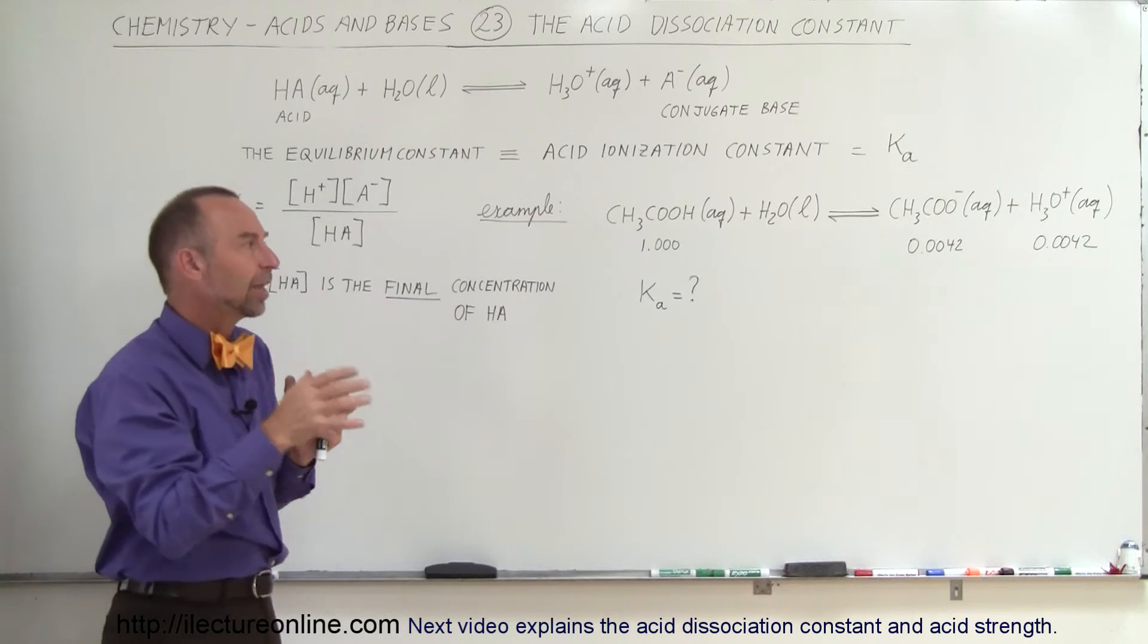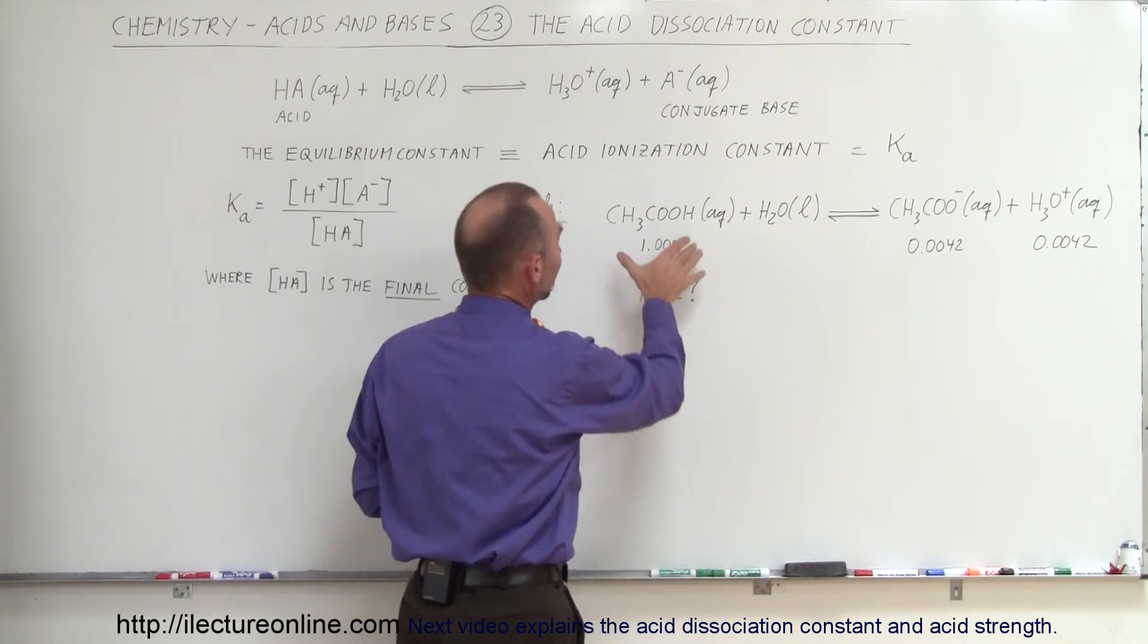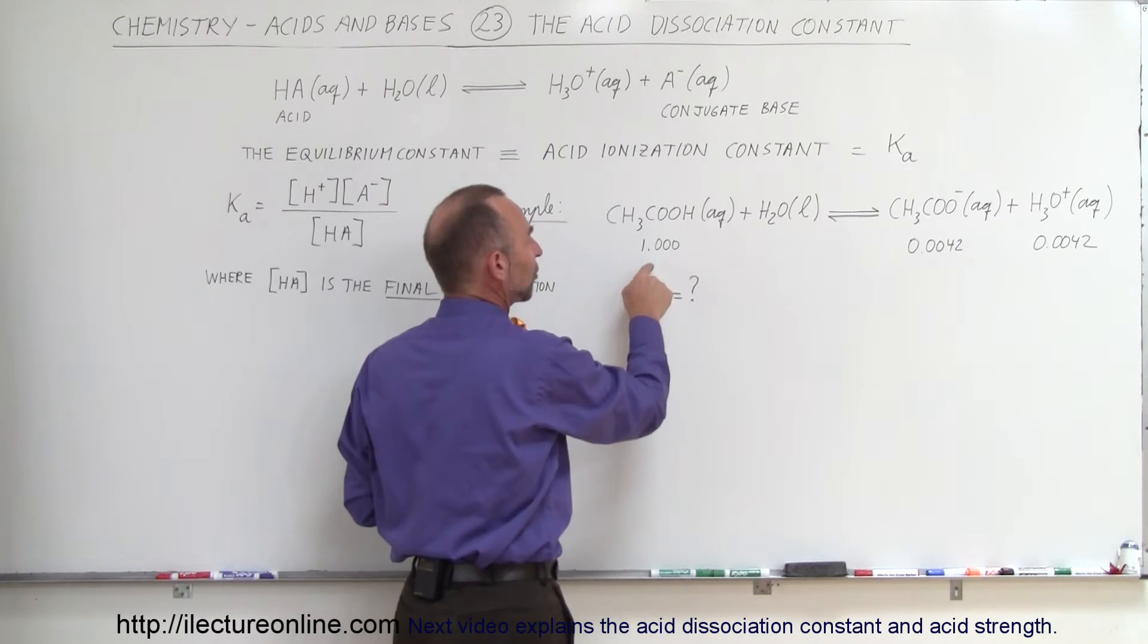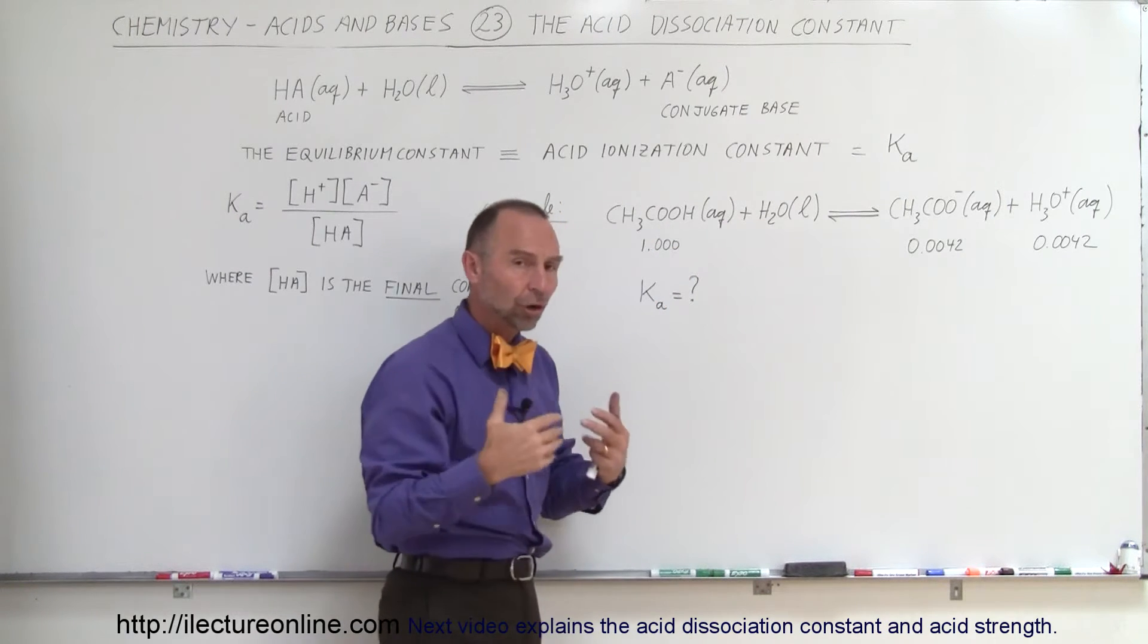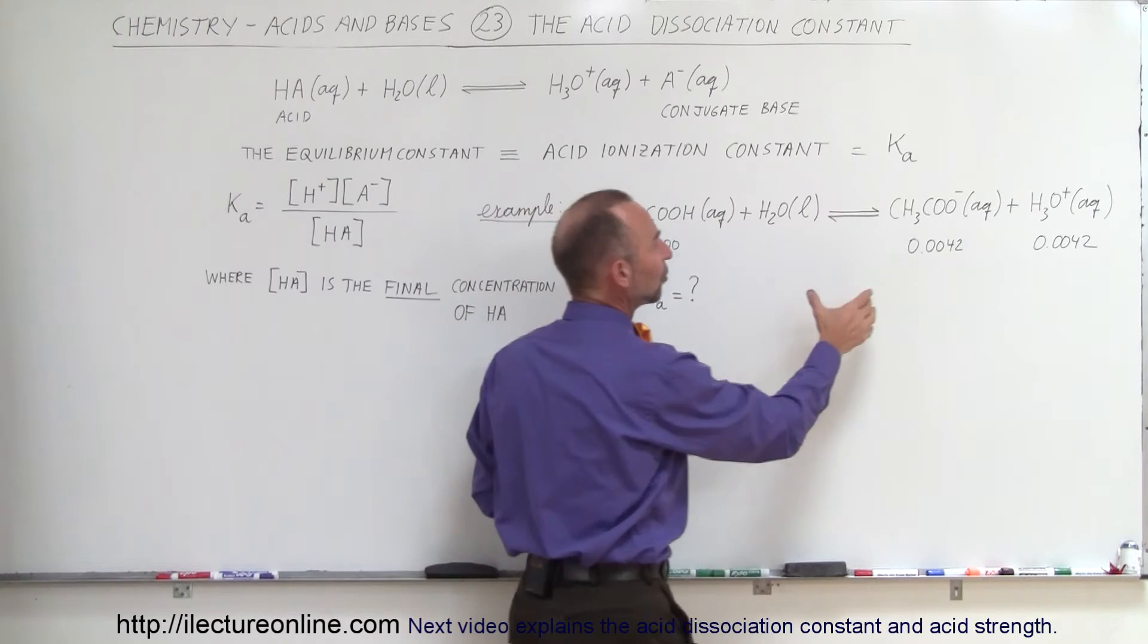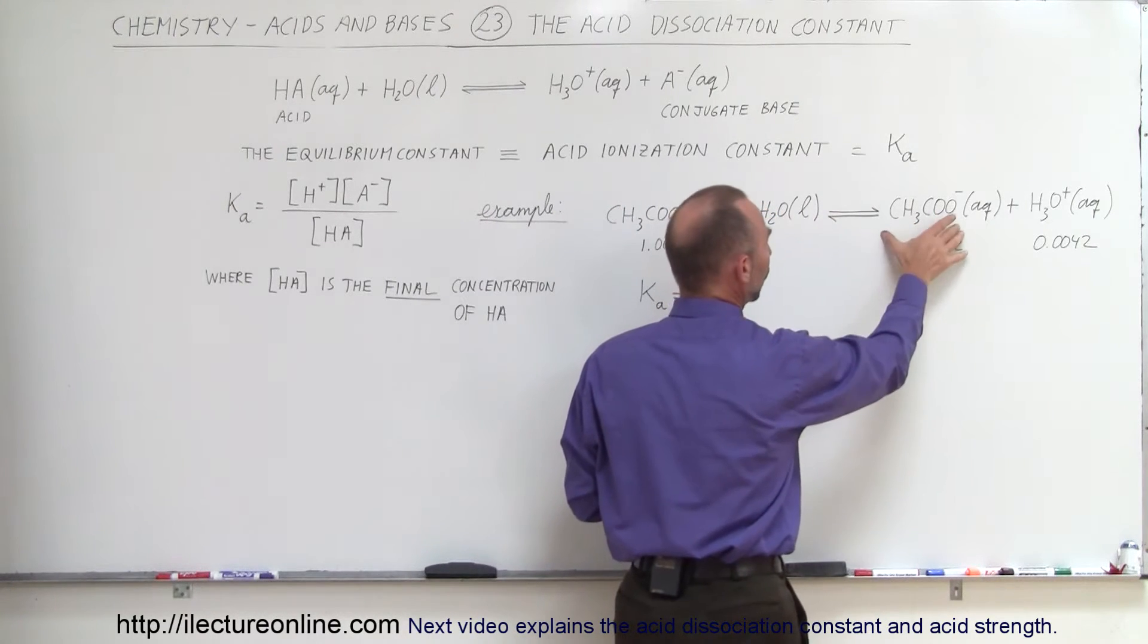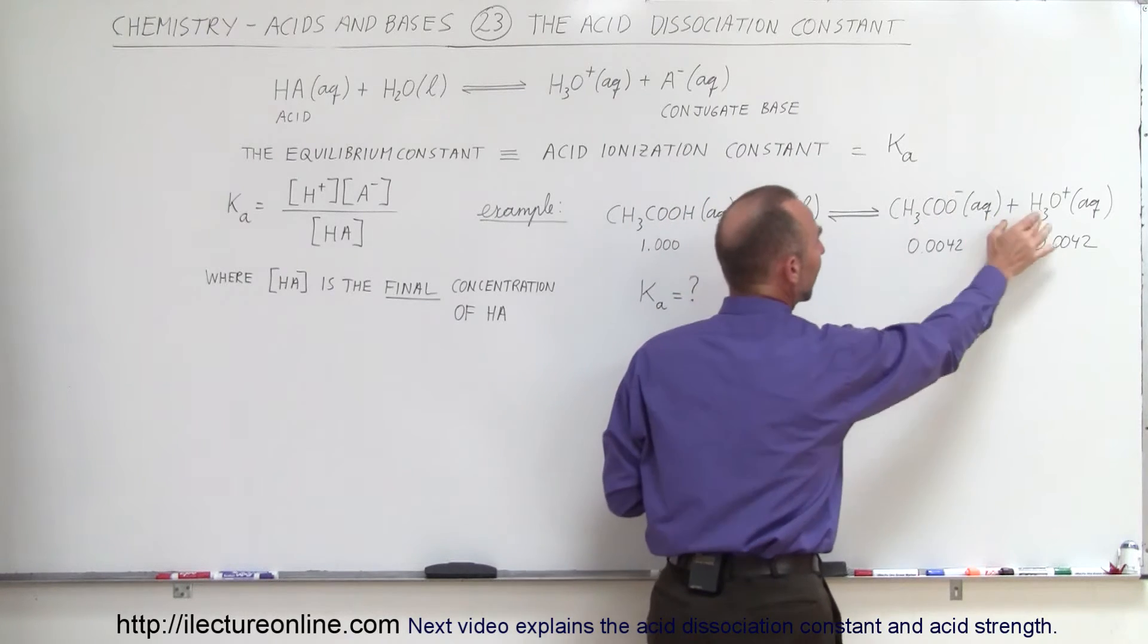For example, when we have acetic acid and we place it in water, even though the molarity of the acetic acid may be 1 at the initial start of the reaction, at the end we'll see that only 0.42% of the acetic acid has dissociated into the acetate ion and the hydrogen ion, which then form the hydronium ion.